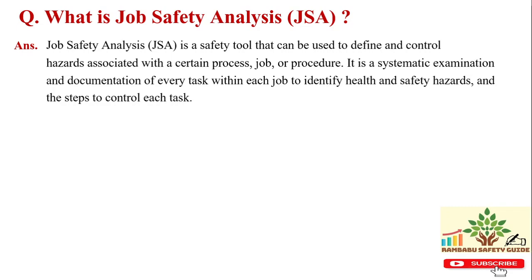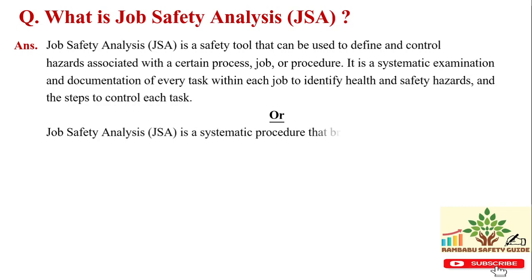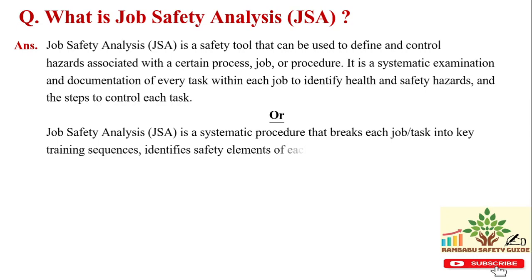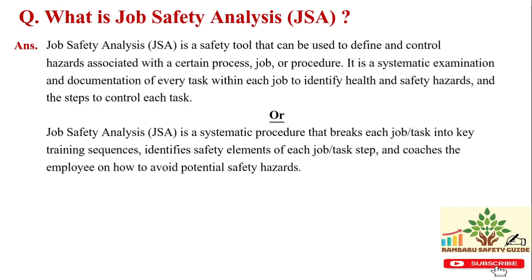Job means work, and job safety analysis discusses safety related to that work. It is used so that there is a certain process in which the job and associated hazards are identified. It is a systematic examination and documentation of tasks to prepare controls that can reduce the risk of those hazards.